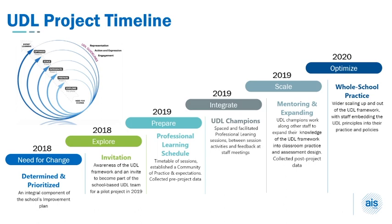At the beginning of 2019, the school leadership team, in conjunction with the AIS consultant, developed the professional learning schedule, which included timetables of sessions, establishing a community of practice, and expectations. A pre-project survey was done to collect data from teachers who had volunteered to be part of the UDL project. Professional sessions commenced mid-2019, with teachers becoming the school's UDL champions. There were also between-session activities, and the UDL champions provided feedback to the whole staff at meetings to maintain the whole school focus.